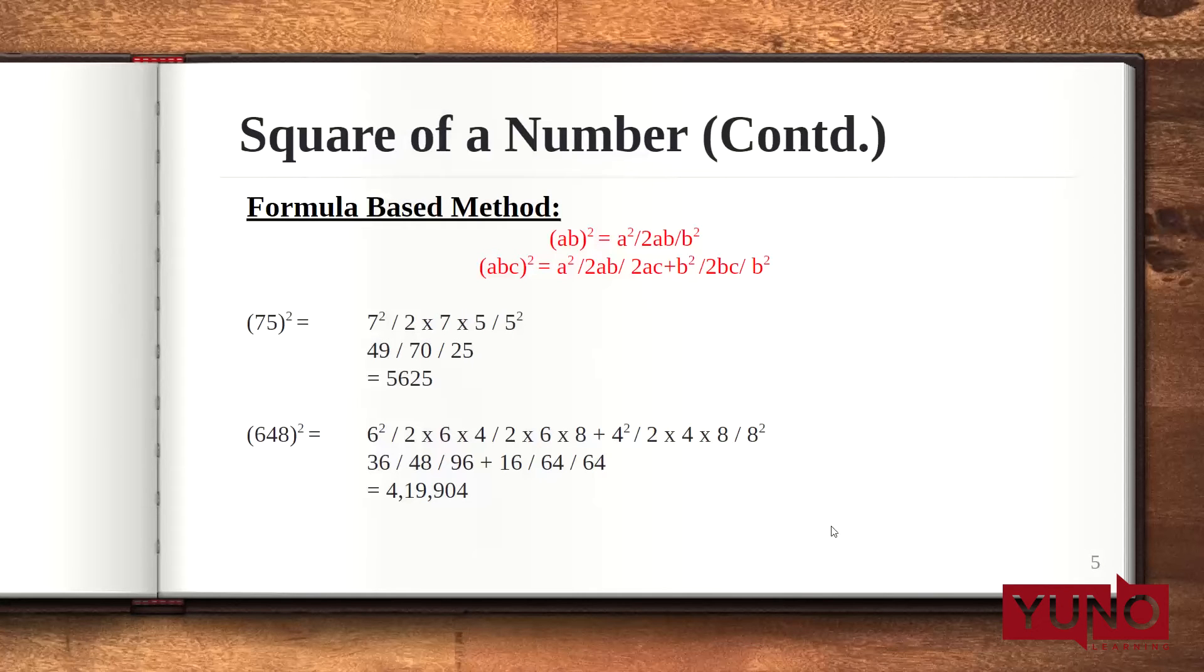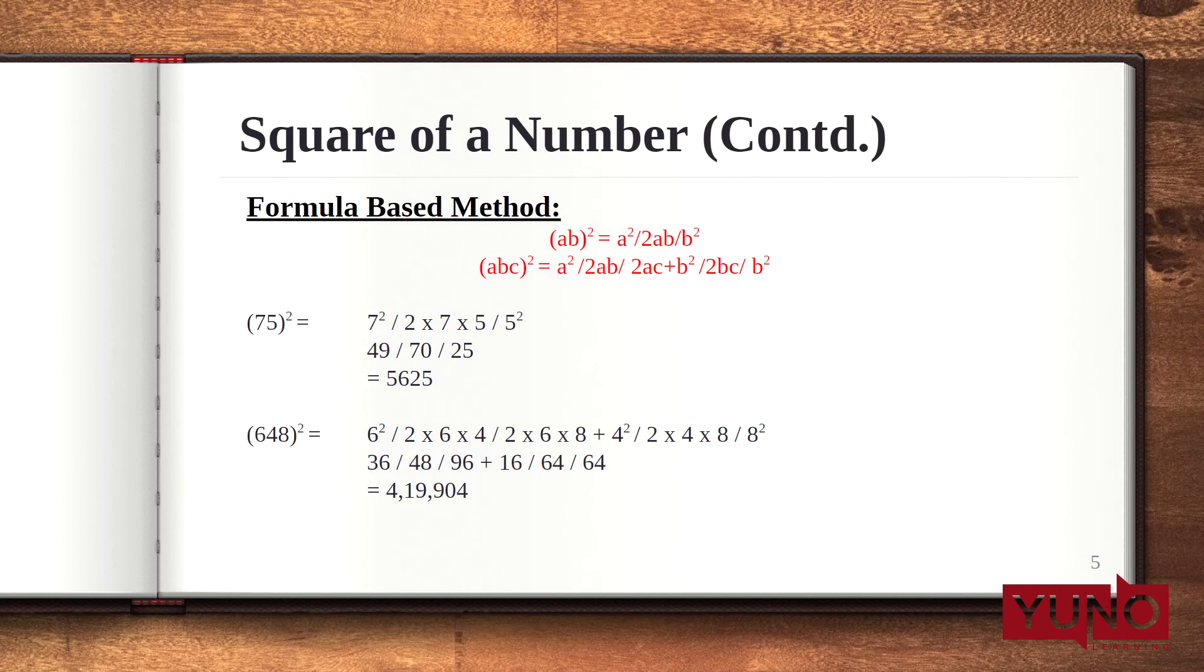One more method that we will see here is formula-based method to calculate the square of a number. Here, we will be observing 2 digits square and 3 digits square. The formula for calculating double digit square is a² balancing 2ab balancing b². This forward slash here represents balancing technique. You can refer to the video where I have taught about balancing. Now, this formula for 3 digit square is written here.